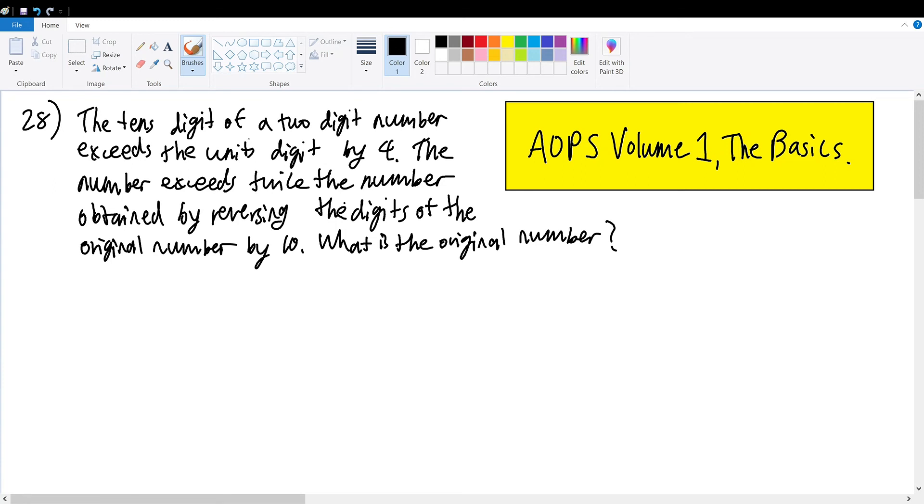AOPS Volume 1, The Basics, number 28. The tenth digit of a two-digit number exceeds the unit's digit by 4. The number exceeds twice the number obtained by reversing the digits of the original number by 10. What is the original number?